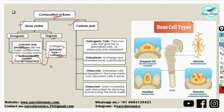The cellular part of bone consists of four types of cells: osteogenic cells, osteoblasts, osteocytes, and osteoclasts. Osteogenic cells are also called osteoprogenitor cells — they are the precursor stem cells that give rise to specialized cells, the osteocytes and osteoblasts. Osteoblasts are responsible for the synthesis and mineralization of bone — basically the calcification of bone is carried out by osteoblasts.